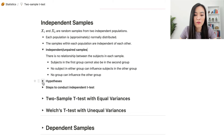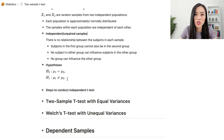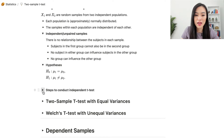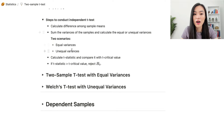For two-sample t-tests we have two hypotheses. The null hypothesis is that the mean of the first population equals the mean of the second population, and the alternative hypothesis is that the two means are not the same. The steps to conduct independent t-tests are: calculate the difference between sample means, sum the variances, determine equal or unequal variances, calculate the t-statistic, and compare it with the t-critical value. If the t-statistic is larger than the t-critical value, we reject the null hypothesis.